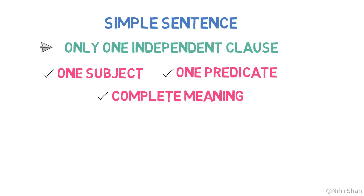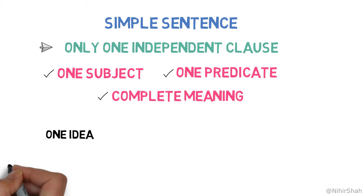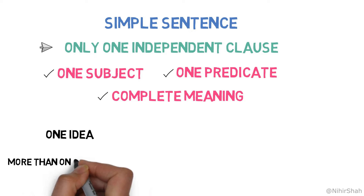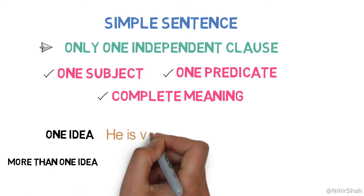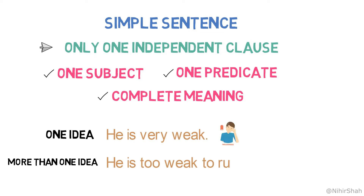This means it has only one subject and one predicate and it will have a complete meaning by itself. However, it may contain only one idea or thought or more than one idea or thought. For example, 'He is very weak.' Here, there is only one idea. However, look into this sentence: 'He is too weak to run fast.'